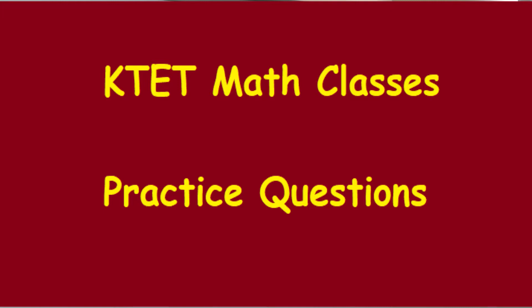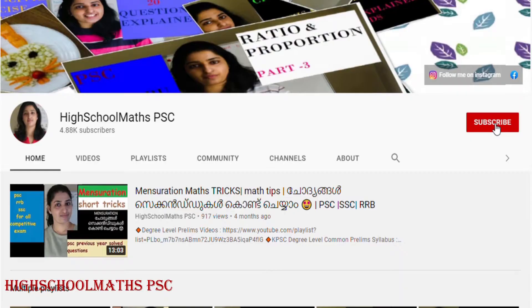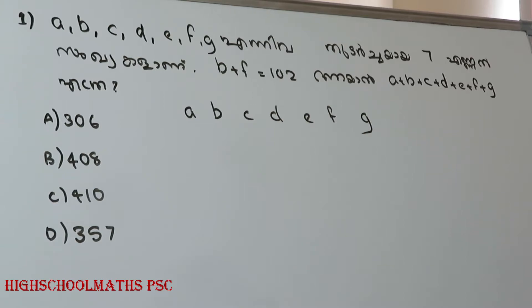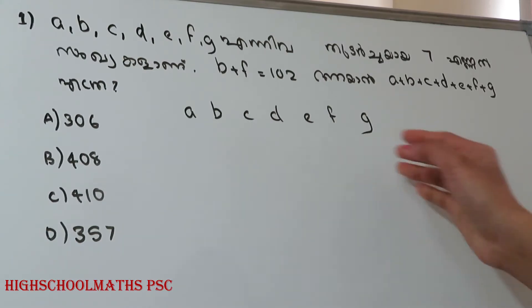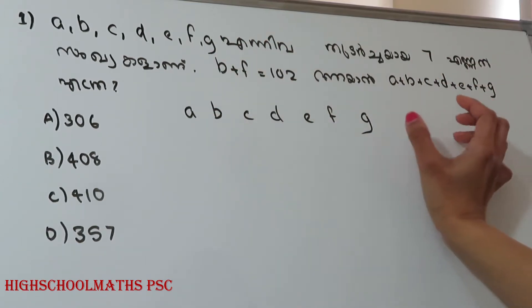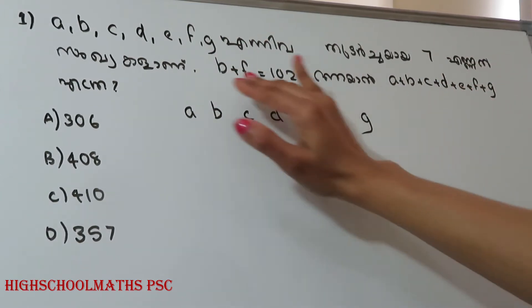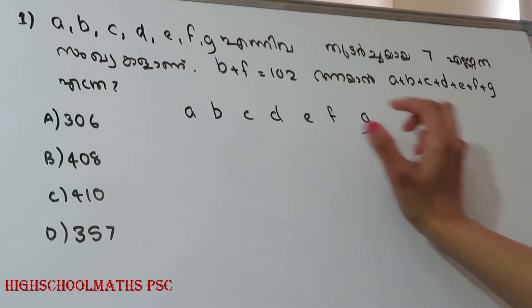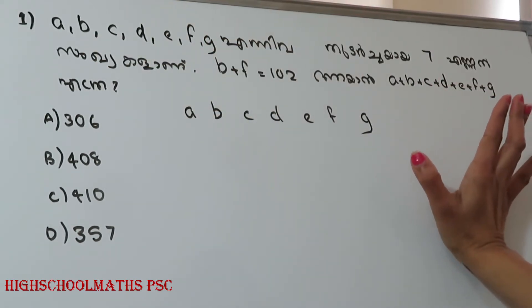You can click on the iButton. Now let's talk about these questions. A, B, C, D, E, F, G are 7 consecutive counting numbers. If B plus F is equal to 102, find the value of A plus B plus C plus D plus E plus F plus G. As you can see, A plus G — this is 7 consecutive counting numbers. If B plus F is equal to 102, then you can add 7 consecutive counting numbers.